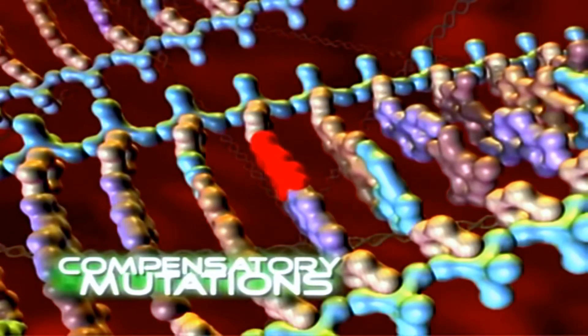Over time, interestingly, you can find compensatory mutations to increase the growth rate. So, second mutations occur to build the organism back to where it was, but they never get back there completely.